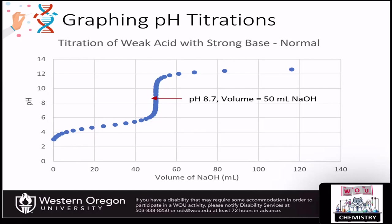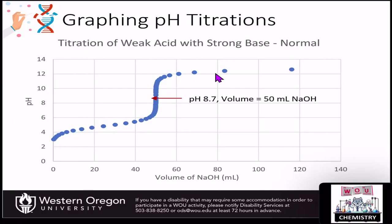In this last section, we want to talk about graphing and how we can determine the equivalency point from the graph. We've already looked at the normal graph, which is standardly done by putting the titrant on the x-axis and the change in what you're looking at on the y-axis. In the case of a titration with a weak acid with a strong base, this is going to give us a sigmoidal plot.